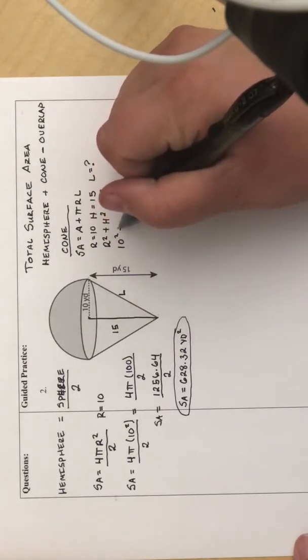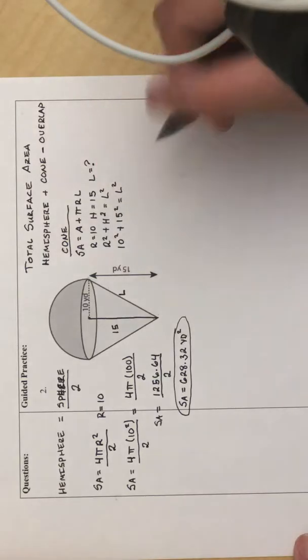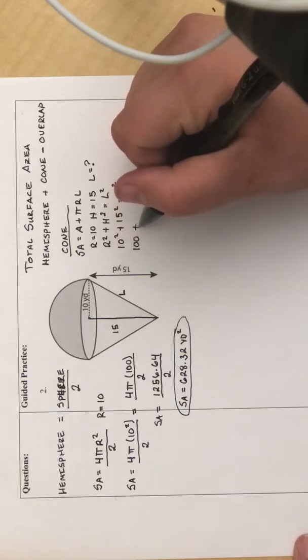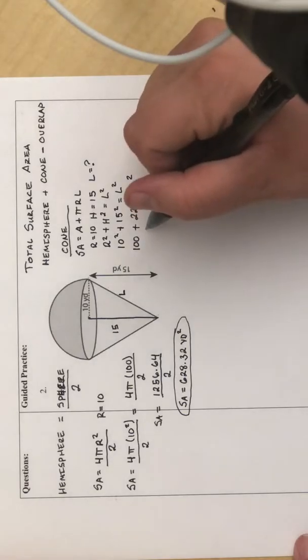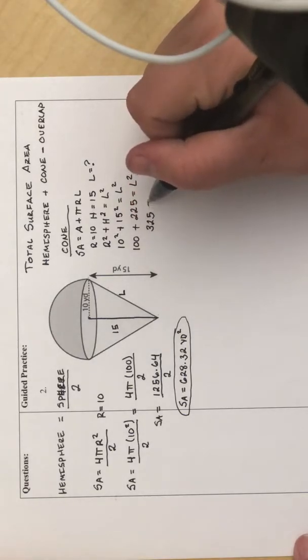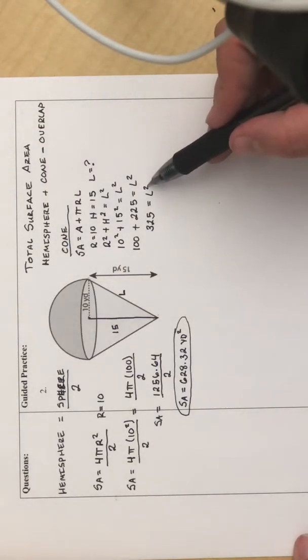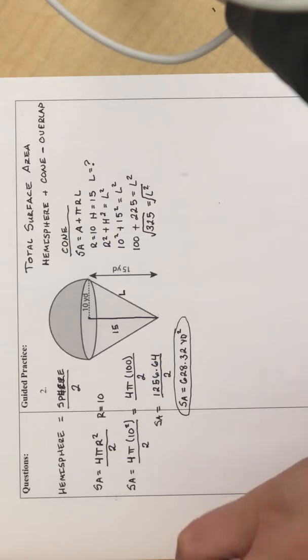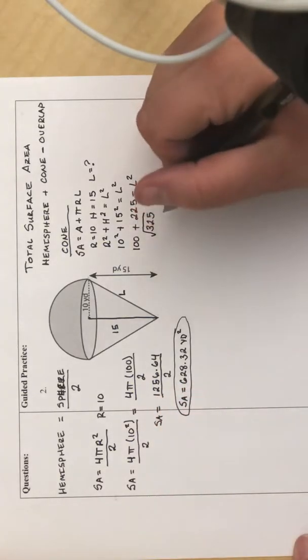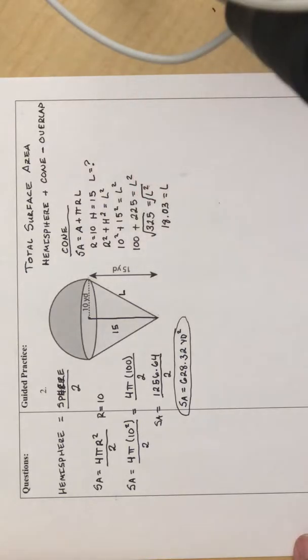So I know that r is 10, so 10 squared plus 15 squared equals L squared. 10 squared is 100, 15 squared is 225. And if I add those together, I get 325. So now to get rid of this square, I'm going to have to square root both sides. And the square root of 325 is 18.03. That's going to be L.